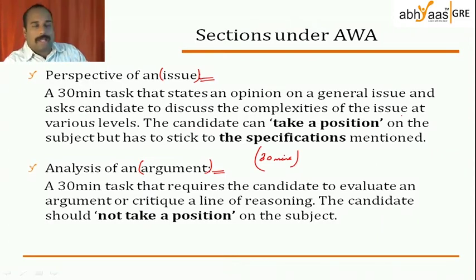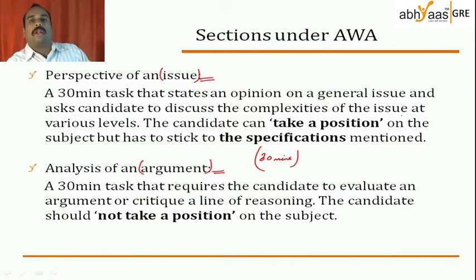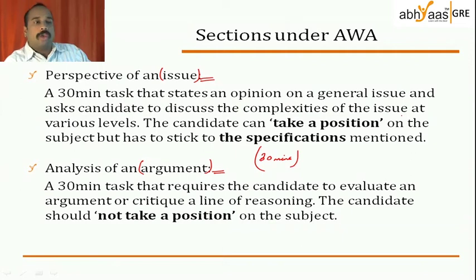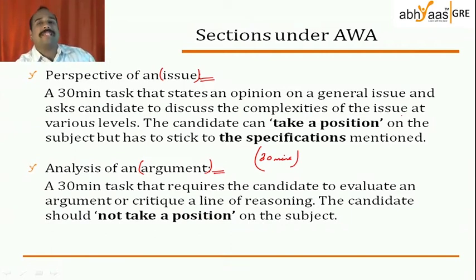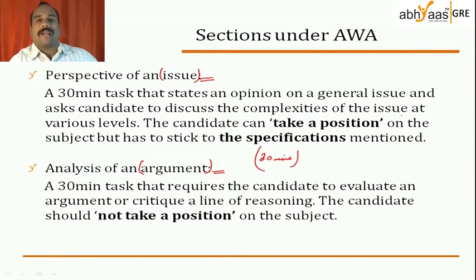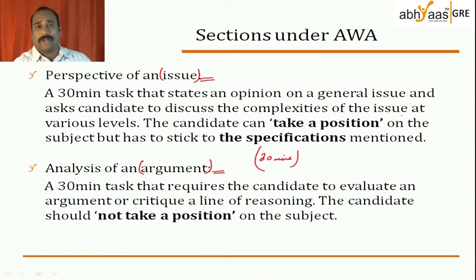In the issue task it's an essay — there is a topic and you have to write about it. You can write your opinion, take sides, and prove yourself right. In the argument task, you are supposed to be critical of an opinion or idea that somebody has given — you have to critically analyze, find the faults in the idea, find the faults in the thought process, find the faults in the reasoning or in the way the author is validating his opinion. In the argument task, tell yourself: the author is wrong, I am right.